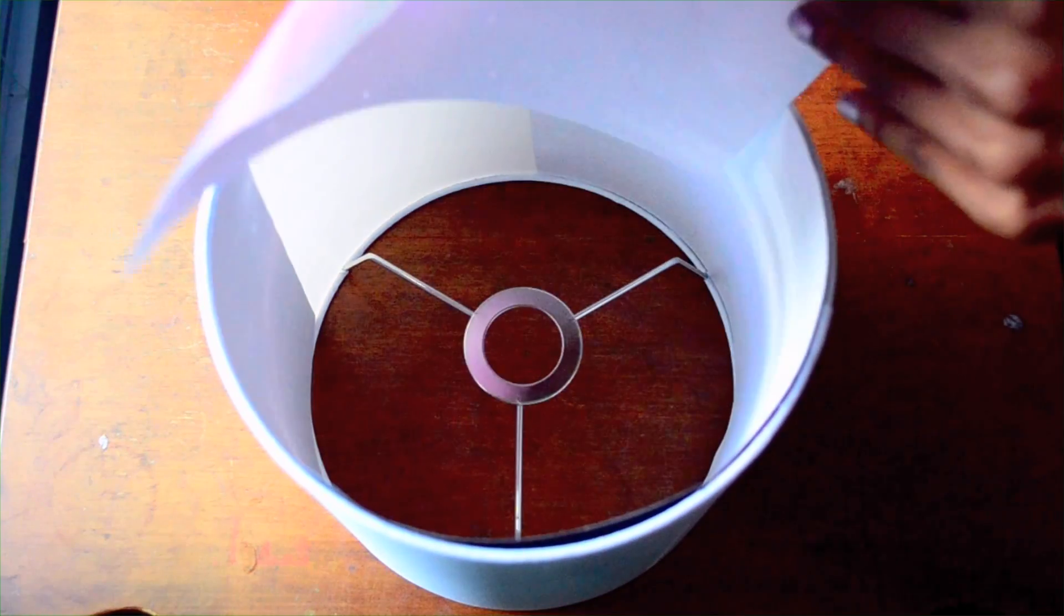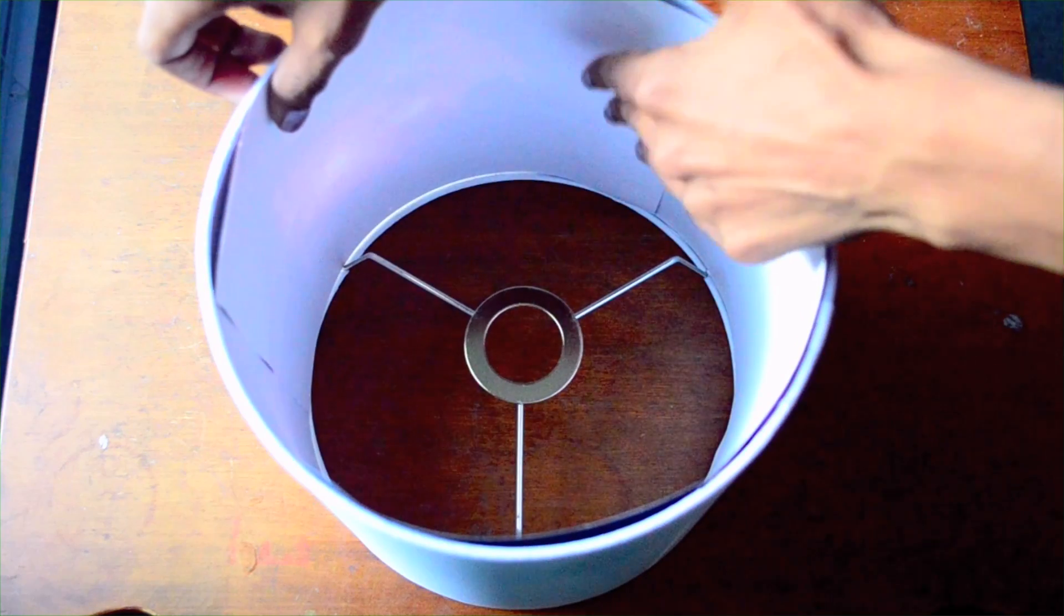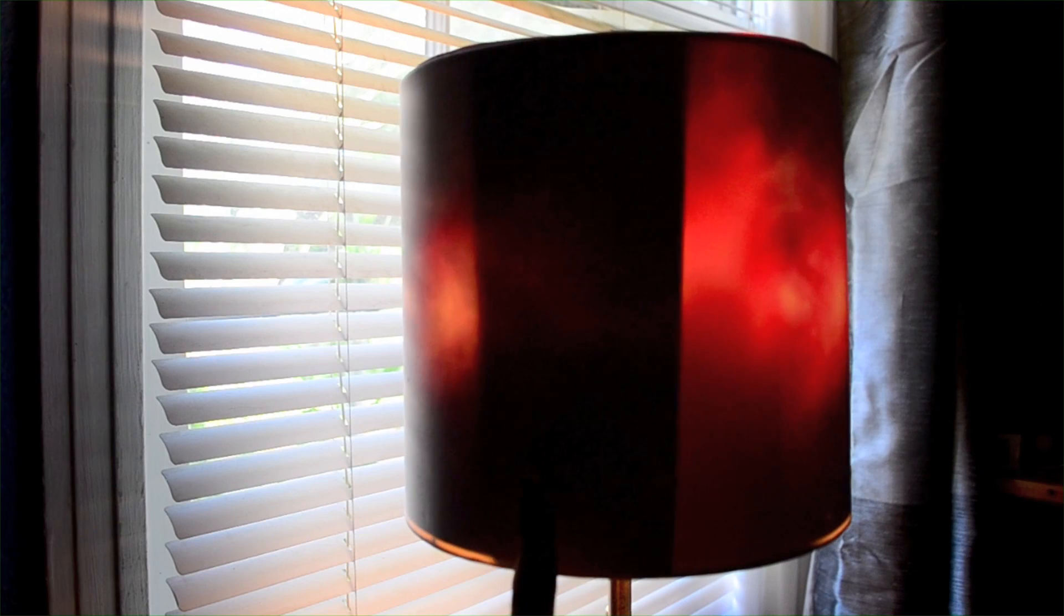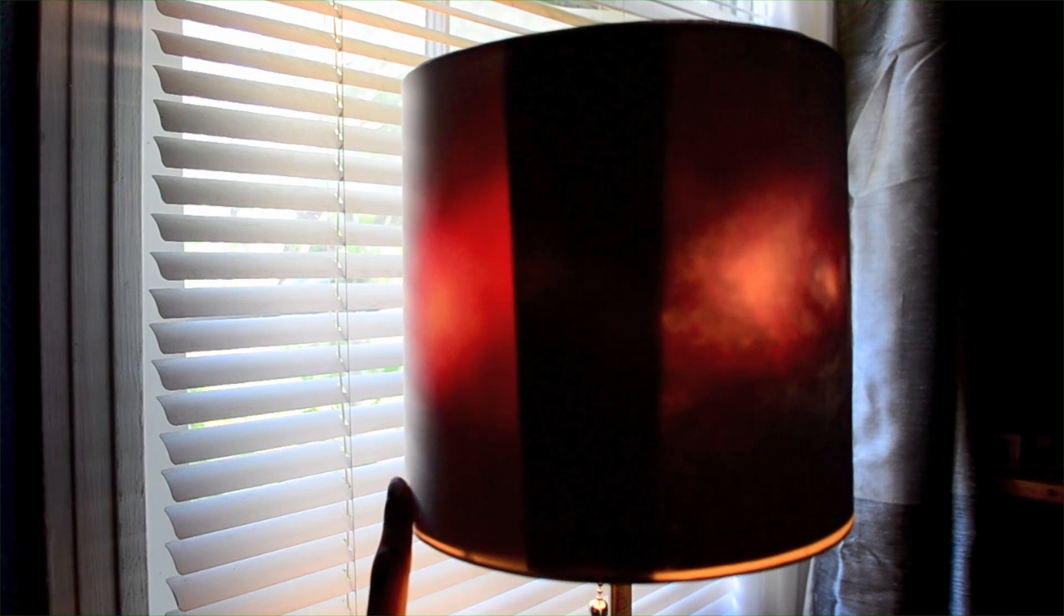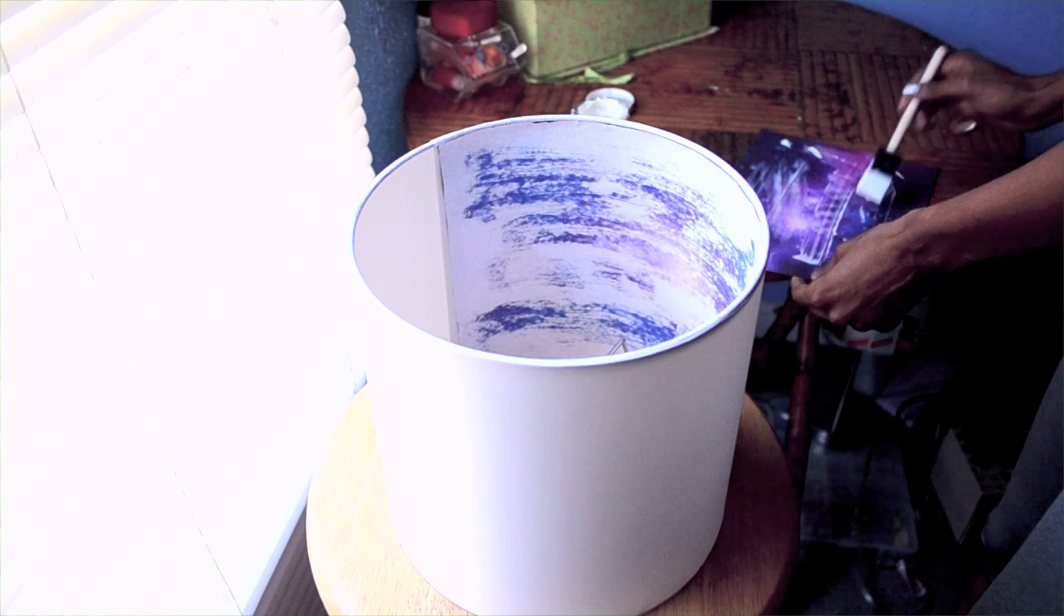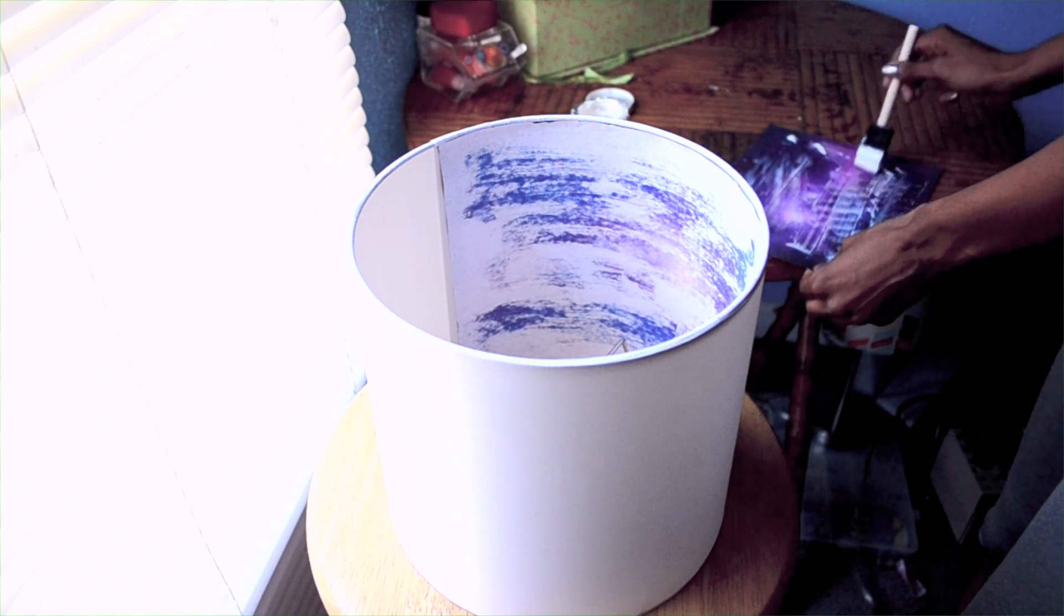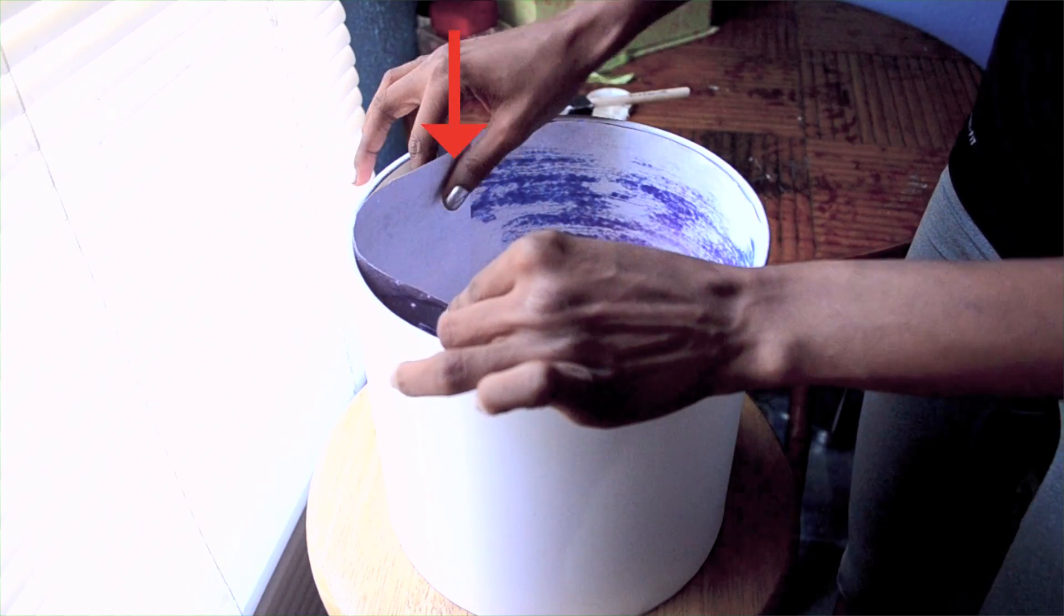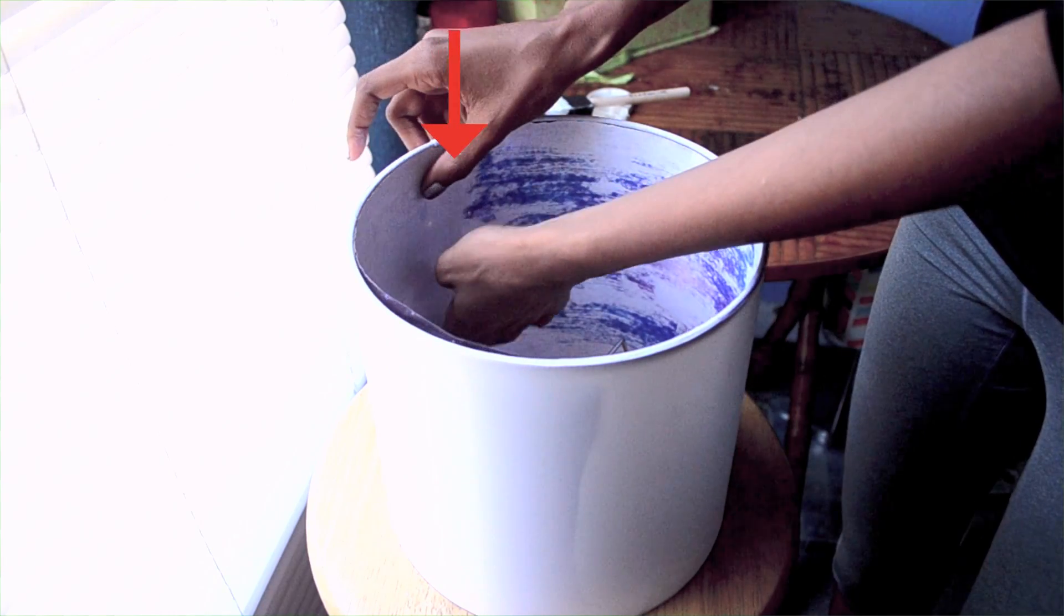So here's the deal about overlap. When you overlap two pieces of paper inside of the lamp, it will show when you turn the light on. So you want to overlap as little as possible. There's a seam on the lamp right here, so what I'm doing is overlapping the two sheets of paper behind this seam so that the line that you would normally see when the light is turned on gets hidden behind this seam.